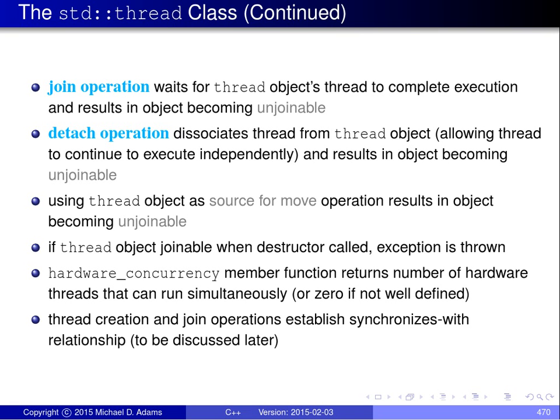There's a static member function in the Thread class called hardware_concurrency that returns the number of hardware threads that can be run simultaneously. This is useful to know for some applications how many threads a particular platform can handle at once. Note that this function is allowed to return zero in the case that it's not well defined how many hardware threads can run at the same time, so make sure you handle that case. Thread creation and join operations establish what are called 'synchronizes-with' relationships, which we'll return to at a later point.